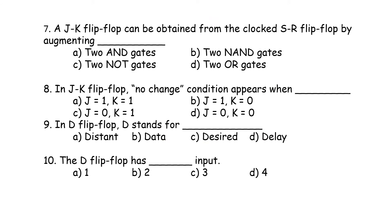A JK flip-flop can be obtained from the clocked SR flip-flop by augmenting two AND gates. The JK flip-flop can be obtained from the clocked SR flip-flop by augmenting two AND gates — that is the correct answer.